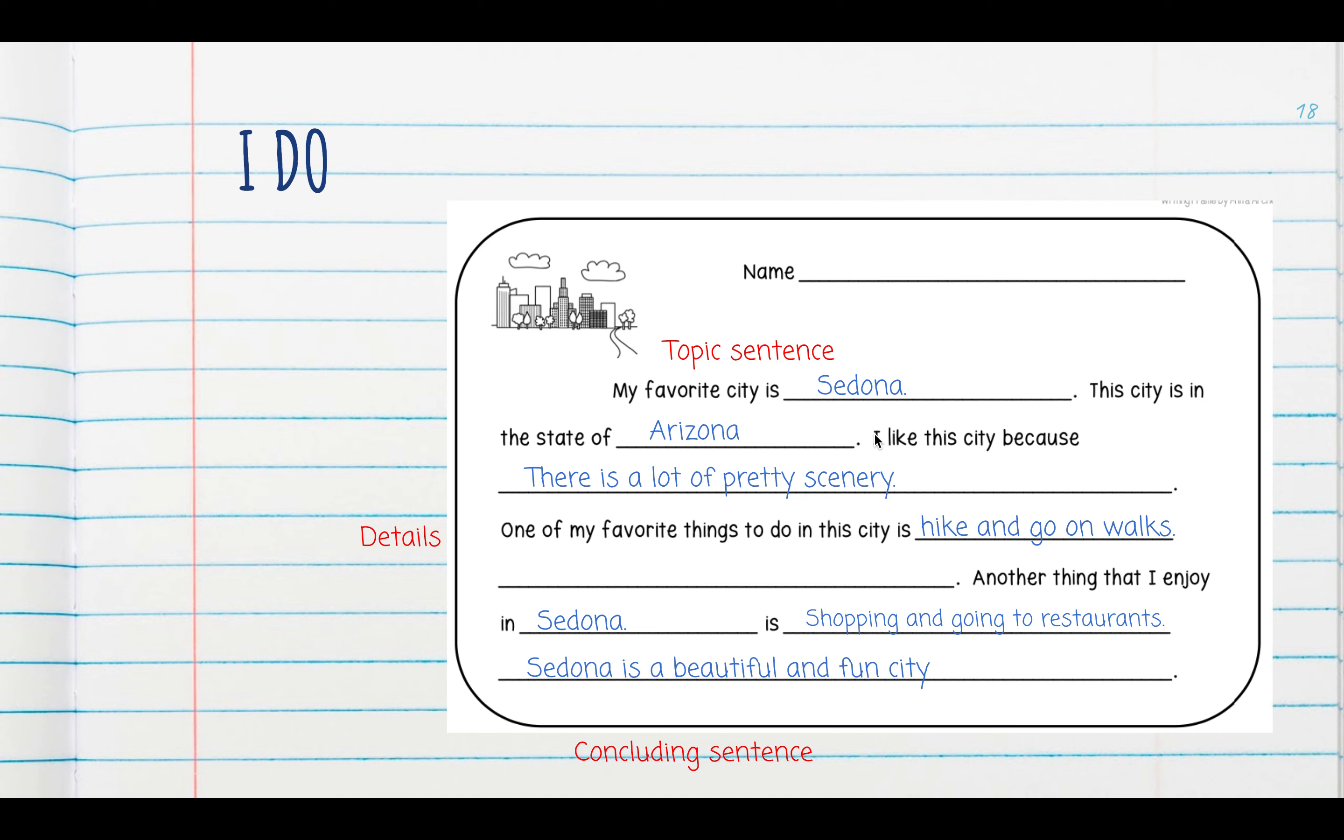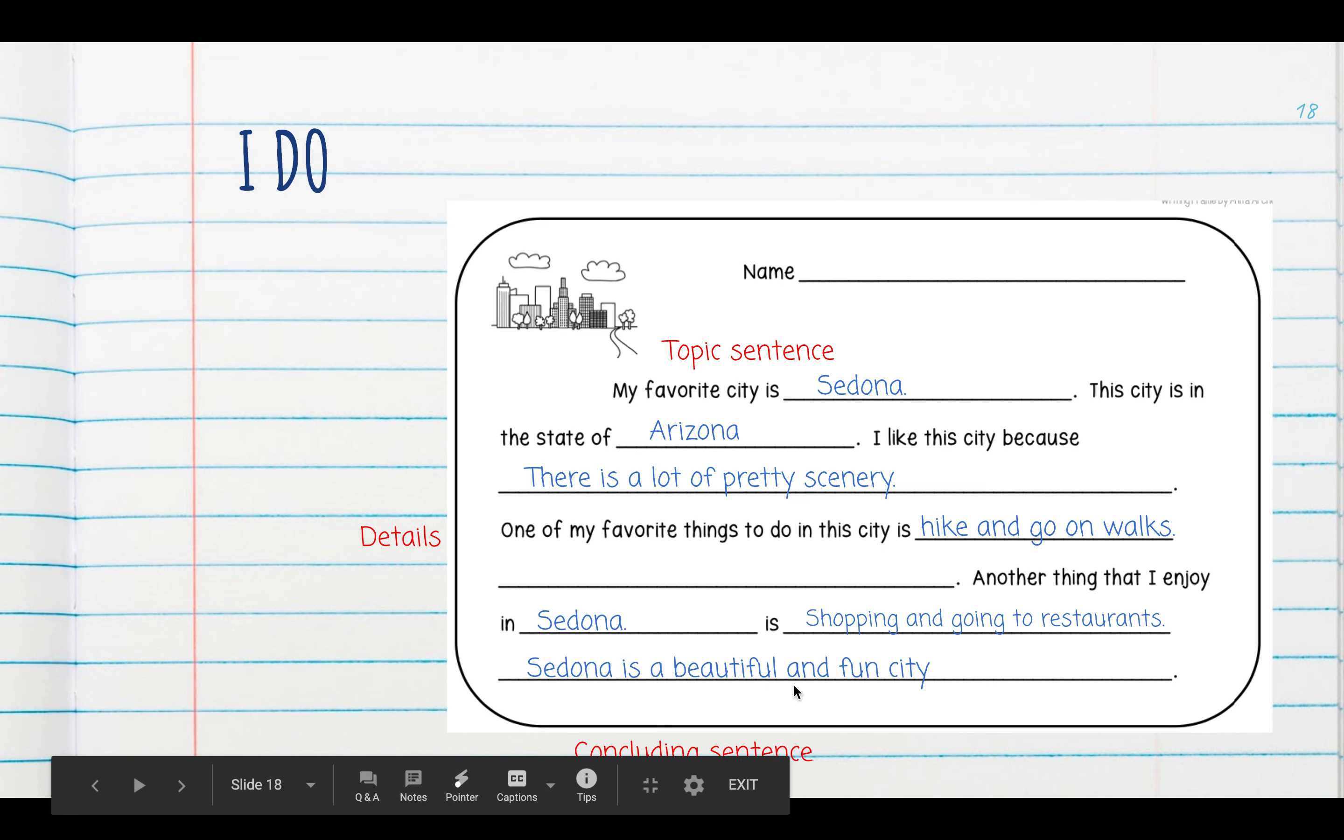One of my favorite things to do in this city is go on hikes and walks. This is another reason that helps support the topic sentence about my favorite city being Sedona. Another thing that I enjoy in Sedona is shopping and going to restaurants. This is yet another reason that helps support my topic sentence. Sedona is a beautiful and fun city. This here is my concluding sentence. I'm just wrapping up my paragraph.